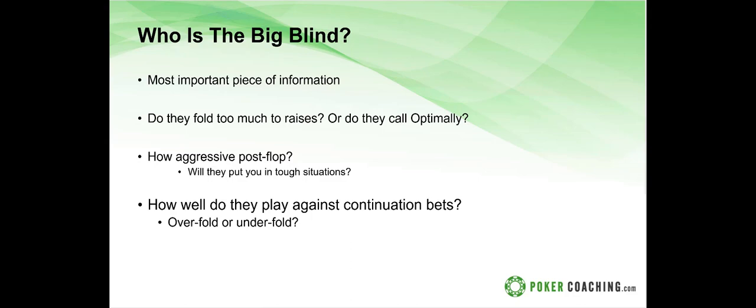Each of these questions leads to an exploitable adjustment from our baseline ranges. If the big blind isn't defending enough, we raise more and steal their blind more. If they over-call, they'll have a weaker range post-flop and we can exploit them then. Knowing what type of ranges they defend from the big blind is very important.